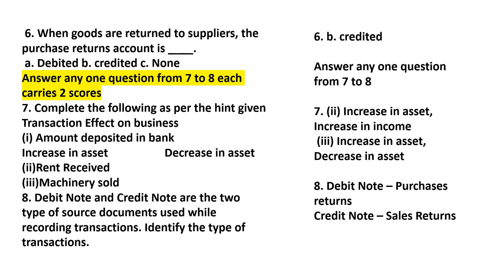The third transaction is machinery sold. The cash increases. Debit notes and credit notes are the two types of source documents used for recording transactions. The debit note is used for purchase return transactions, and the credit note is used for sales return transactions.